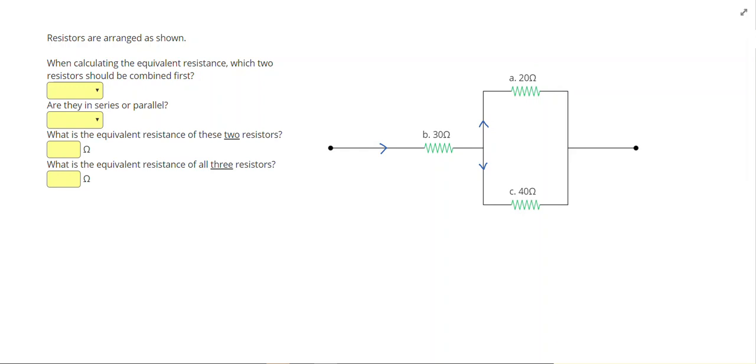It turns out it's going to be A and C, because current is going to split at this intersection. Some will go through A, some will go through C, before they come back together. So, to answer the questions on the left, A and C are in parallel.